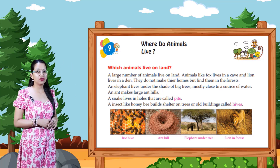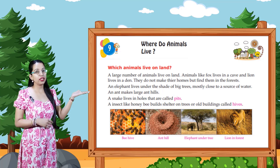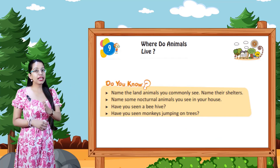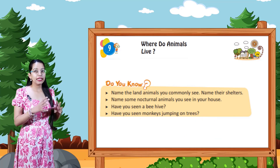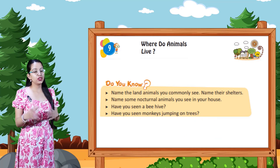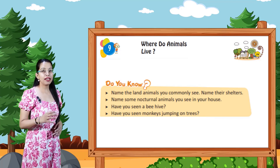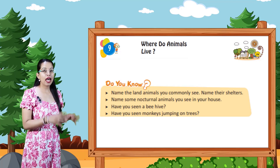Insects like the honey bee build shelter on trees or old buildings, called hives. The first picture is a beehive. You can also see an elephant under a tree in the forest. Do you know the names of land animals you commonly see? Can you name their shelters? Can you name nocturnal animals you see in your house?